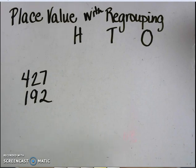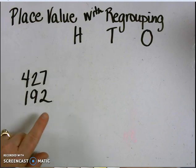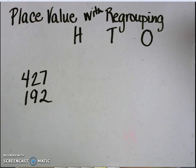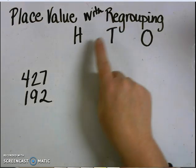In this session, we will work with the operation of subtraction using three-digit numbers, 427 and 192. In addition, we will use the strategy of regrouping by place value.